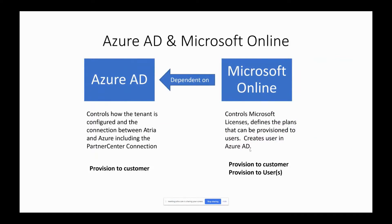There are two core services within Atria that handle Microsoft Online Services. The Azure AD service controls how the tenant is configured and the connection between Atria, including the connection through to Partner Center. That service is provisioned to the customer. The Microsoft Online service is dependent on the Azure AD service, so we need to provision Azure AD first. It controls Microsoft licensing — how licenses are assigned to users, creating the user in Azure AD and assigning licenses to that user.